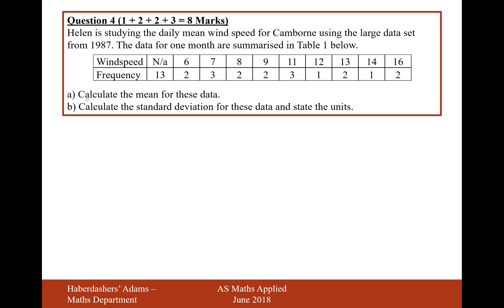Part A is calculate the mean of the data, and part B is the standard deviation of the data. Now what we have here is 13 results that don't have any wind speed for them, so the measuring instrument was faulty or just no results were recorded for 13 of these days. So we just ignore these 13 days for working out the mean, and we'll just work out the mean for this set of 18 days here.